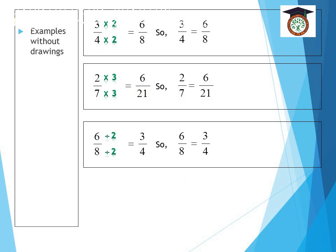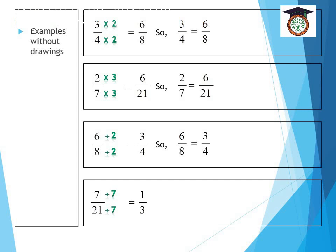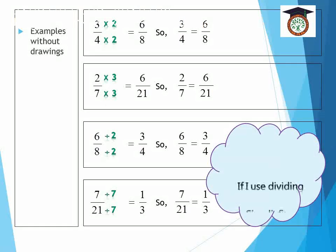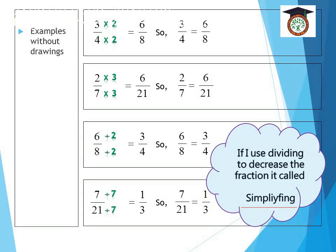Another example, 7 over 21. I can see that 7 and 21 can only divide by 7. So 7 divided by 7 and 21 divided by 7. 7 divided by 7 is equal to 1, 21 divided by 7 is equal to 3. So 7 over 21 is equal to 1 third. We note that here, if I use dividing to degrade the fraction, it's called simplify.